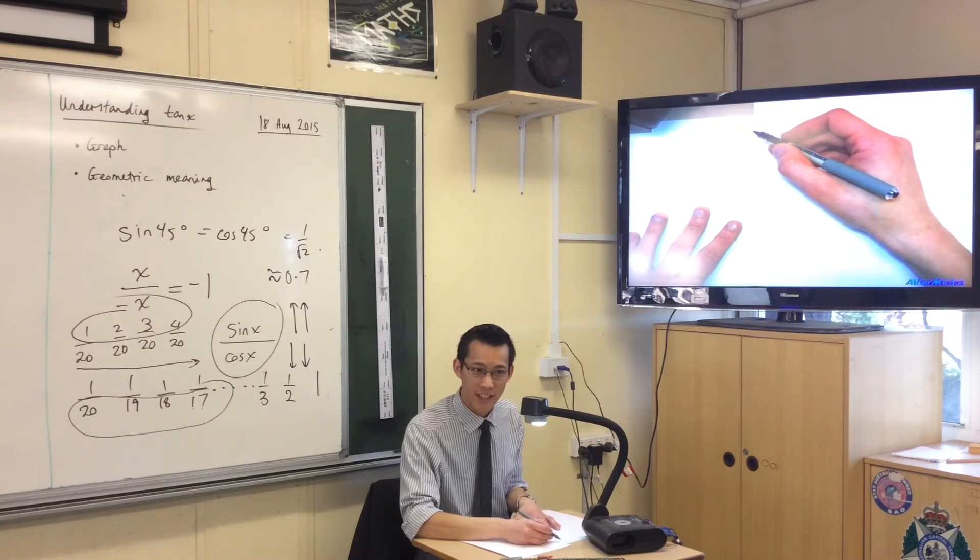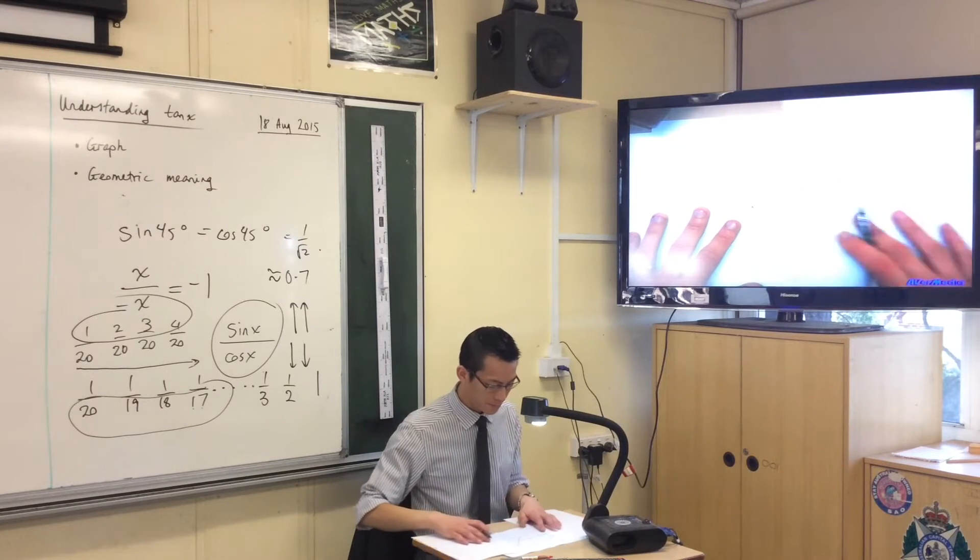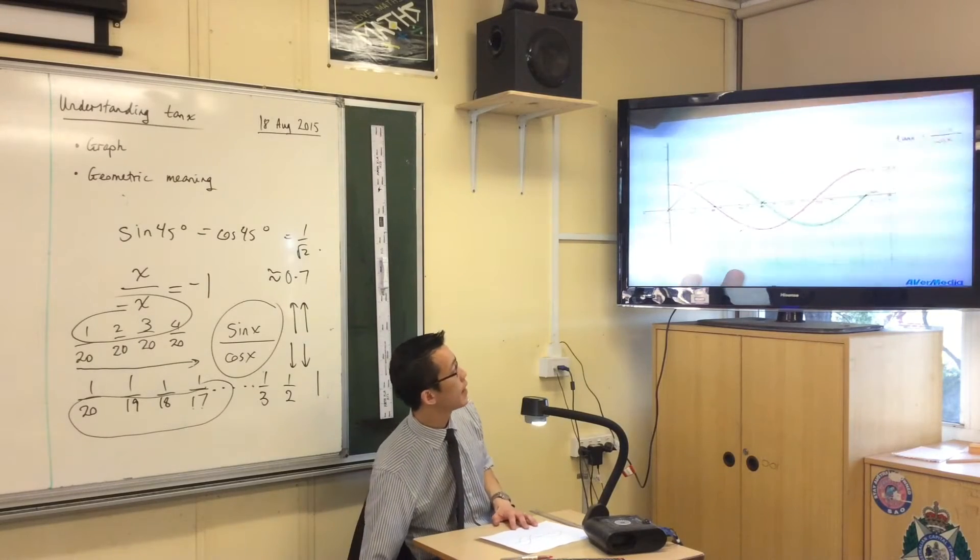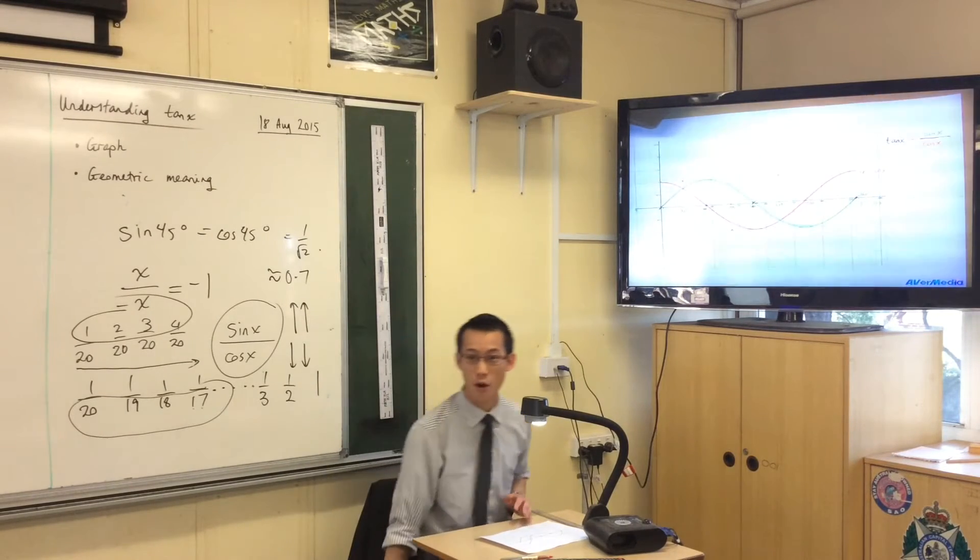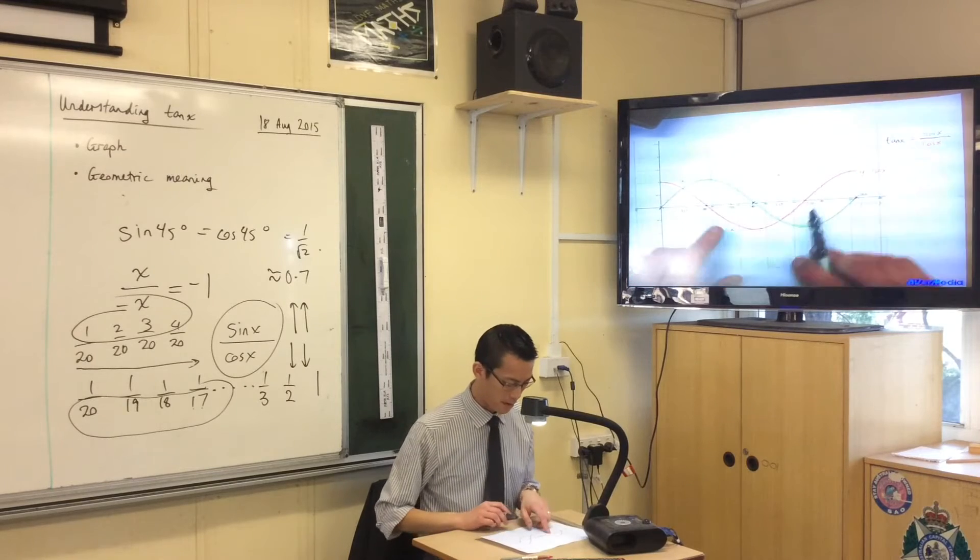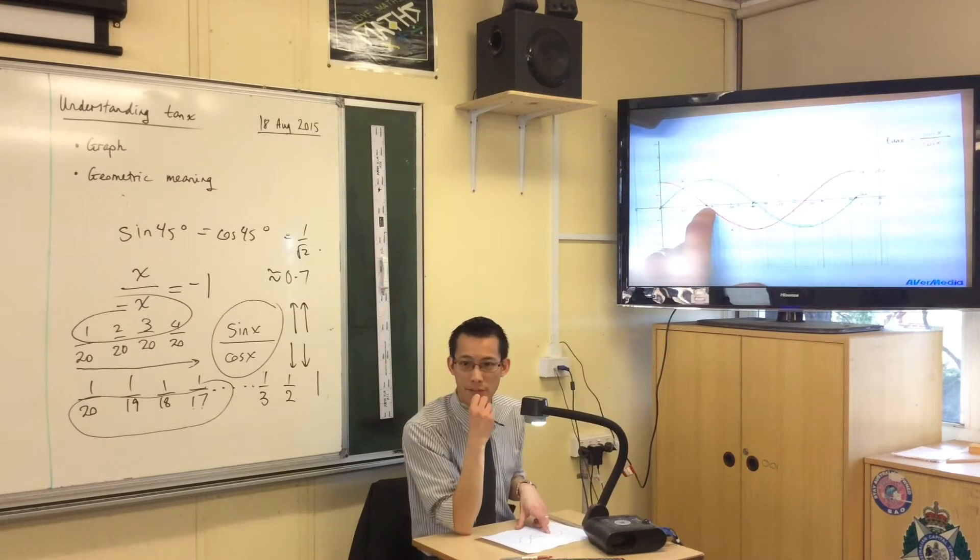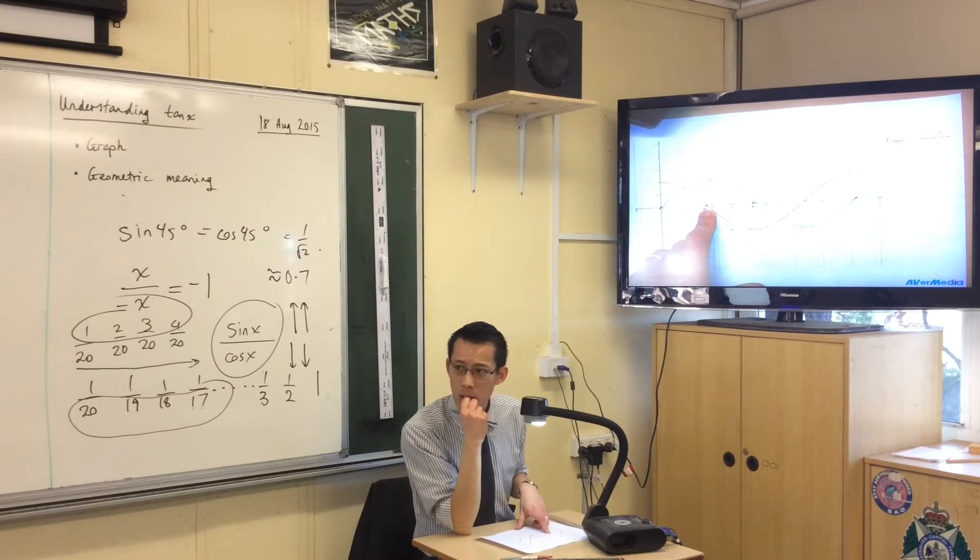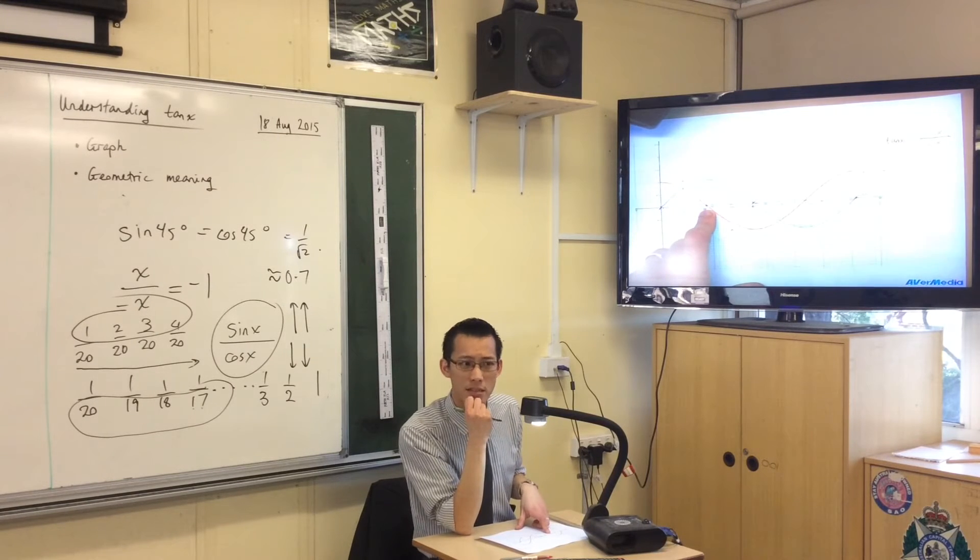Now before I put those in, I need to ask one more question. Let's come back to the whole graph now. Tan is green over pink - green divided by pink. What's the pink graph equal to at 90 degrees? It's equal to zero. What happens when you divide by zero?